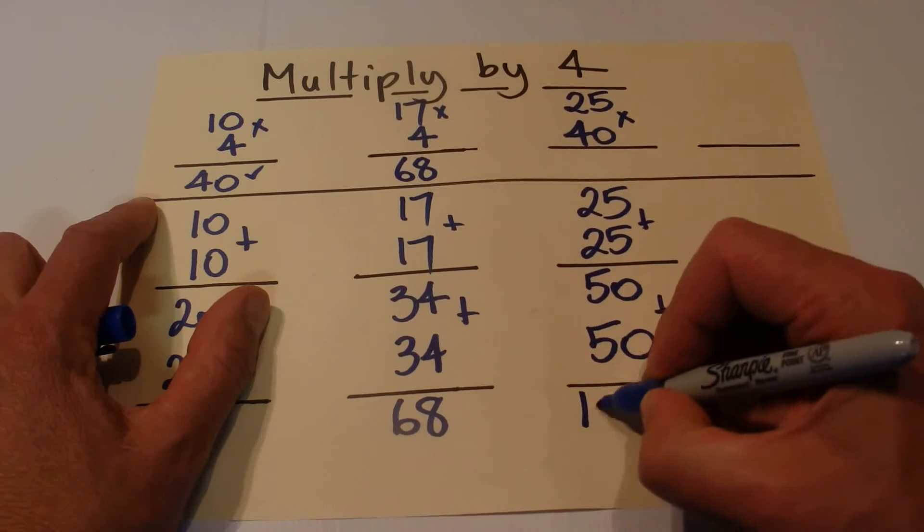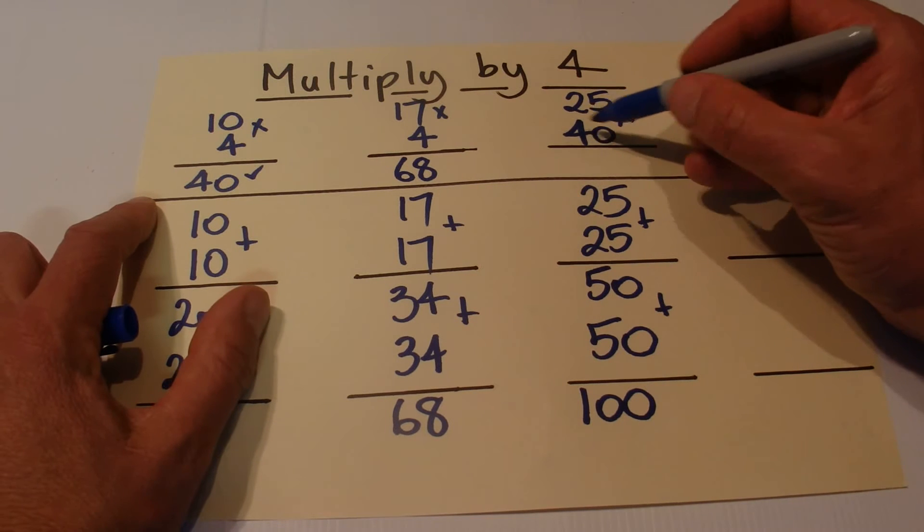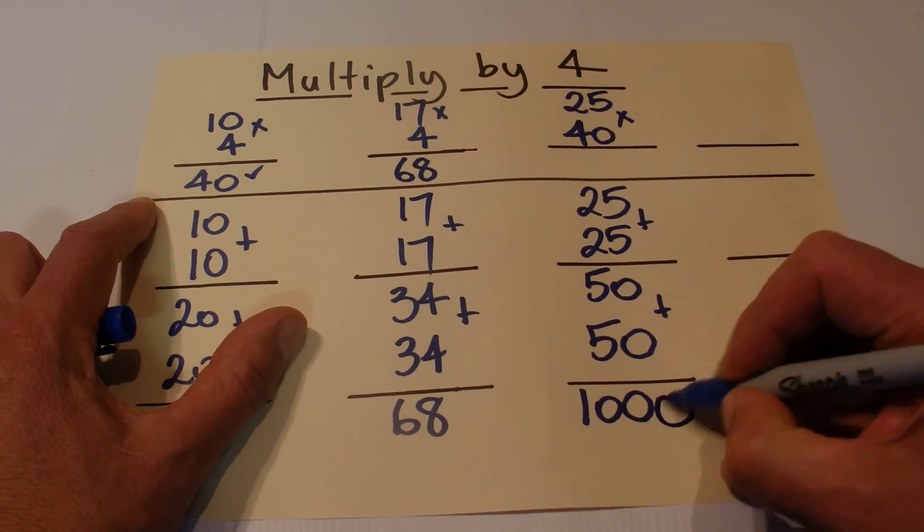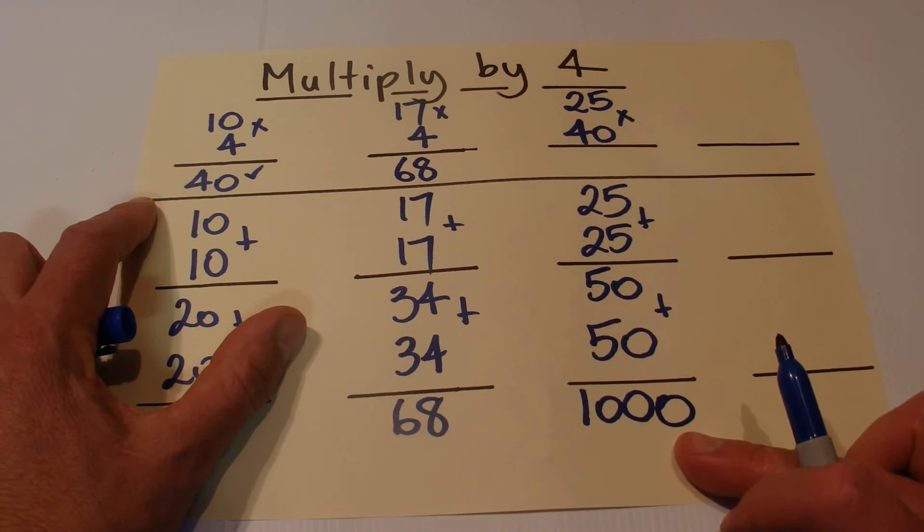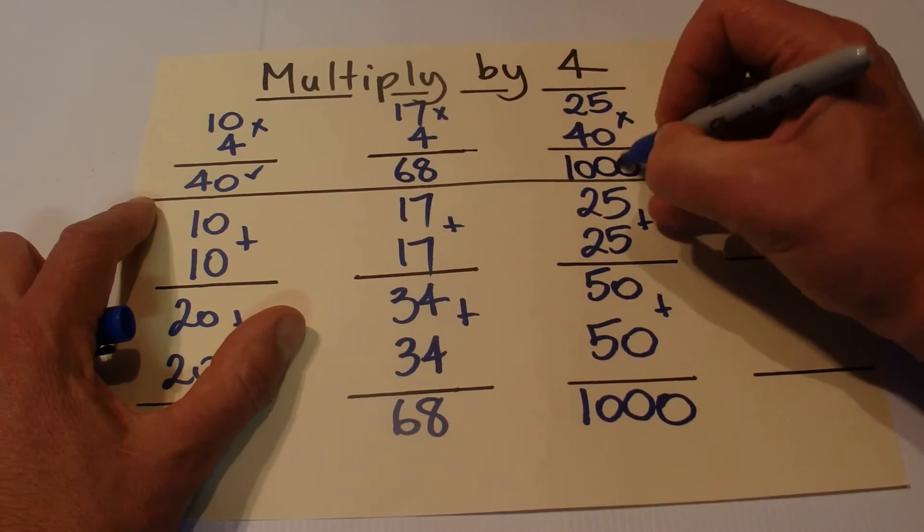Because we're multiplying by 40, we need to pick up that zero and put it on the end of our answer. So the 100 becomes 1000, and 25 times 40 equals 1000.